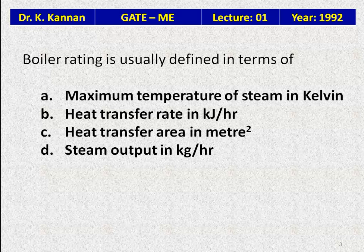Question 2: Boiler rating is usually defined in terms of — A: maximum temperature of steam in Kelvin; B: heat transfer rate in kilojoules per hour; C: heat transfer area in square metres; D: steam output in kilograms per hour. Normally steam power plants are rated with power output in megawatts or kilowatts, but that option is not available here. Among the parameters listed, the best answer is steam output in kilograms per hour — the amount of steam output coming out of the boiler.